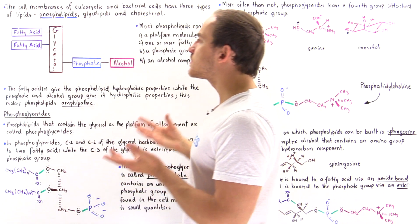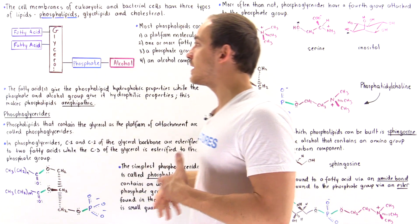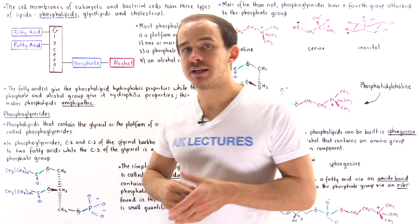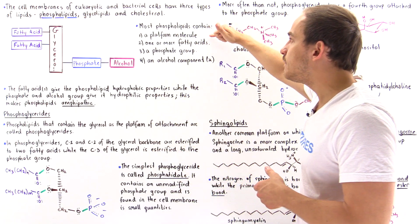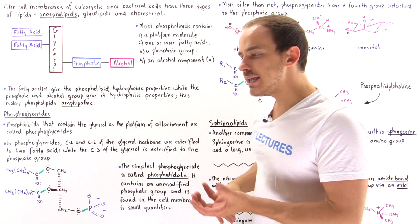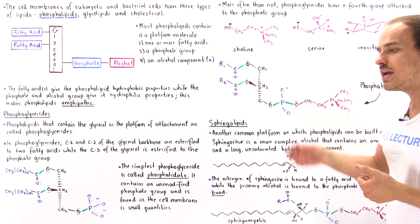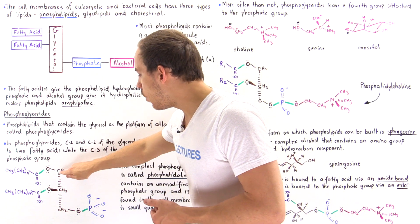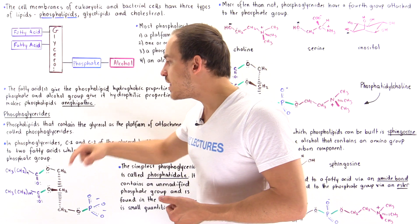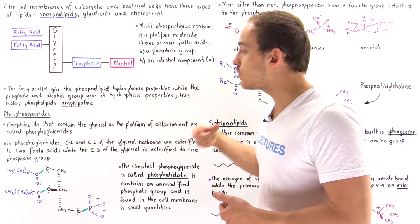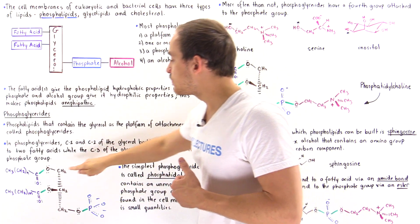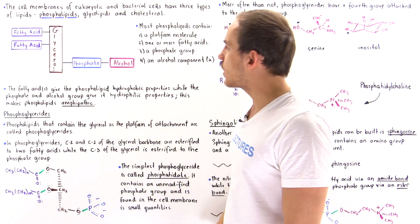Let's begin with phosphoglycerides. By definition, when a phospholipid contains a glycerol as the platform molecule, we call it a phosphoglyceride. A glycerol is a three-carbon alcohol molecule — one, two, three carbons — and each carbon is attached onto an oxygen that was part of the hydroxyl group. After combining these molecules, we remove the H atom, leaving simply these oxygens as shown in the diagram.